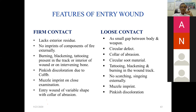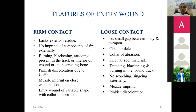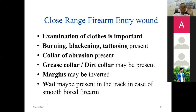Tattooing, blackening, and burning are present in the wound tract. No scorching or singeing externally. Muzzle imprint and pink discoloration due to carboxyhemoglobin. Close range wound: burning, blackening, and tattooing are all present. If there are no clothes, these effects are directly on skin. Collar abrasion is present. Grease collar or dirt collar is present due to friction of the bullet or pellet. Margins may be inverted. Wad may be found in the tract.